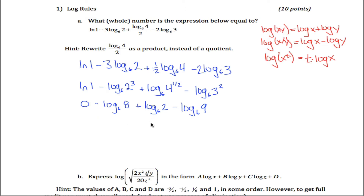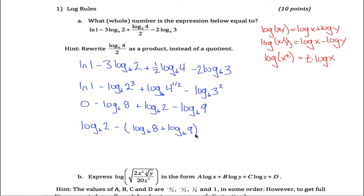So we have this mess. This negative out in front is a little weird, so think of it as log base six of two minus — since this term was negative and this term was negative — the log base six of eight plus the log base six of nine. You might say it's supposed to be negative; well, yes, because I pulled the negative out here. To justify that, take this negative and distribute it into the parentheses and you get exactly what we had before.